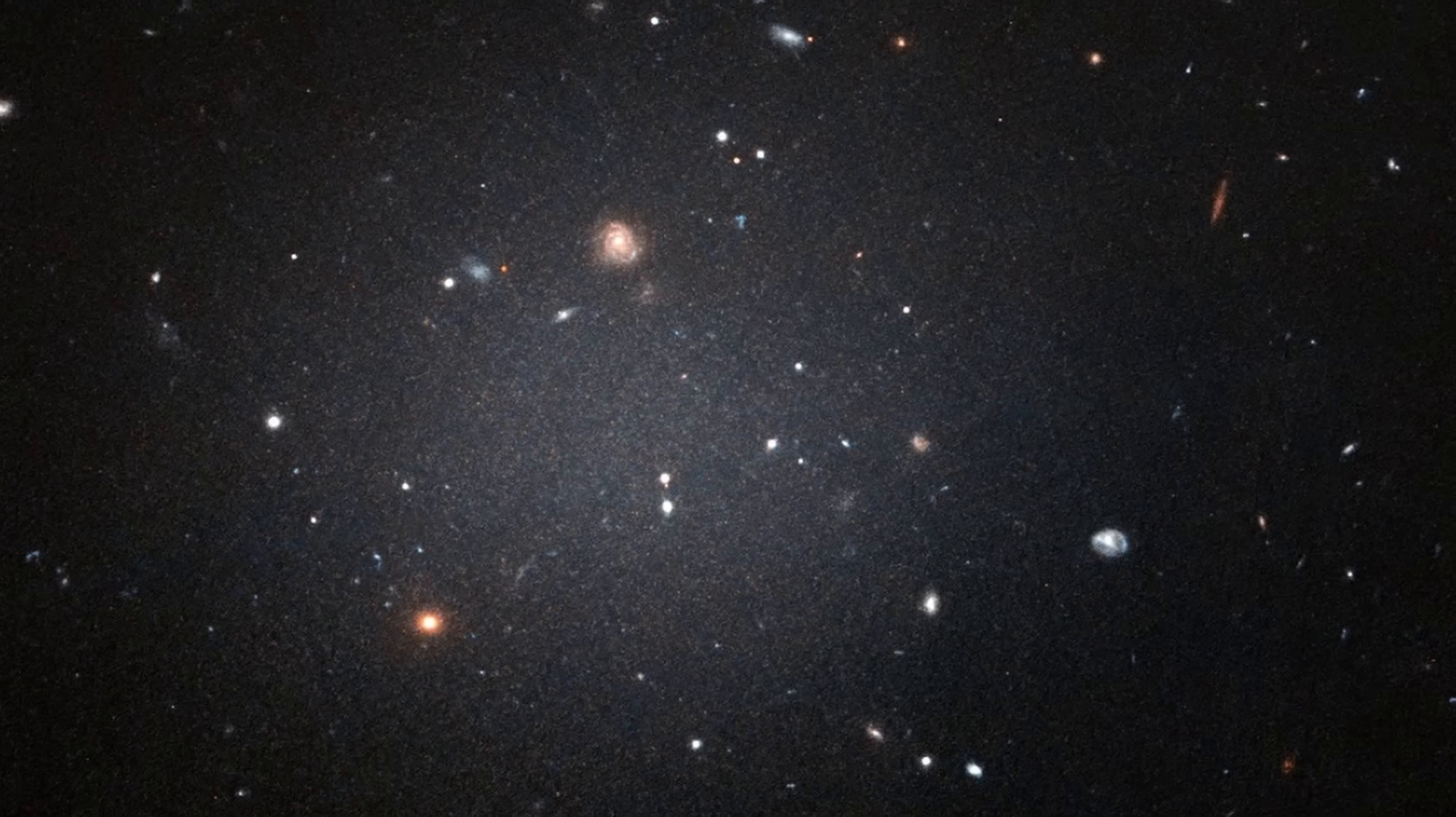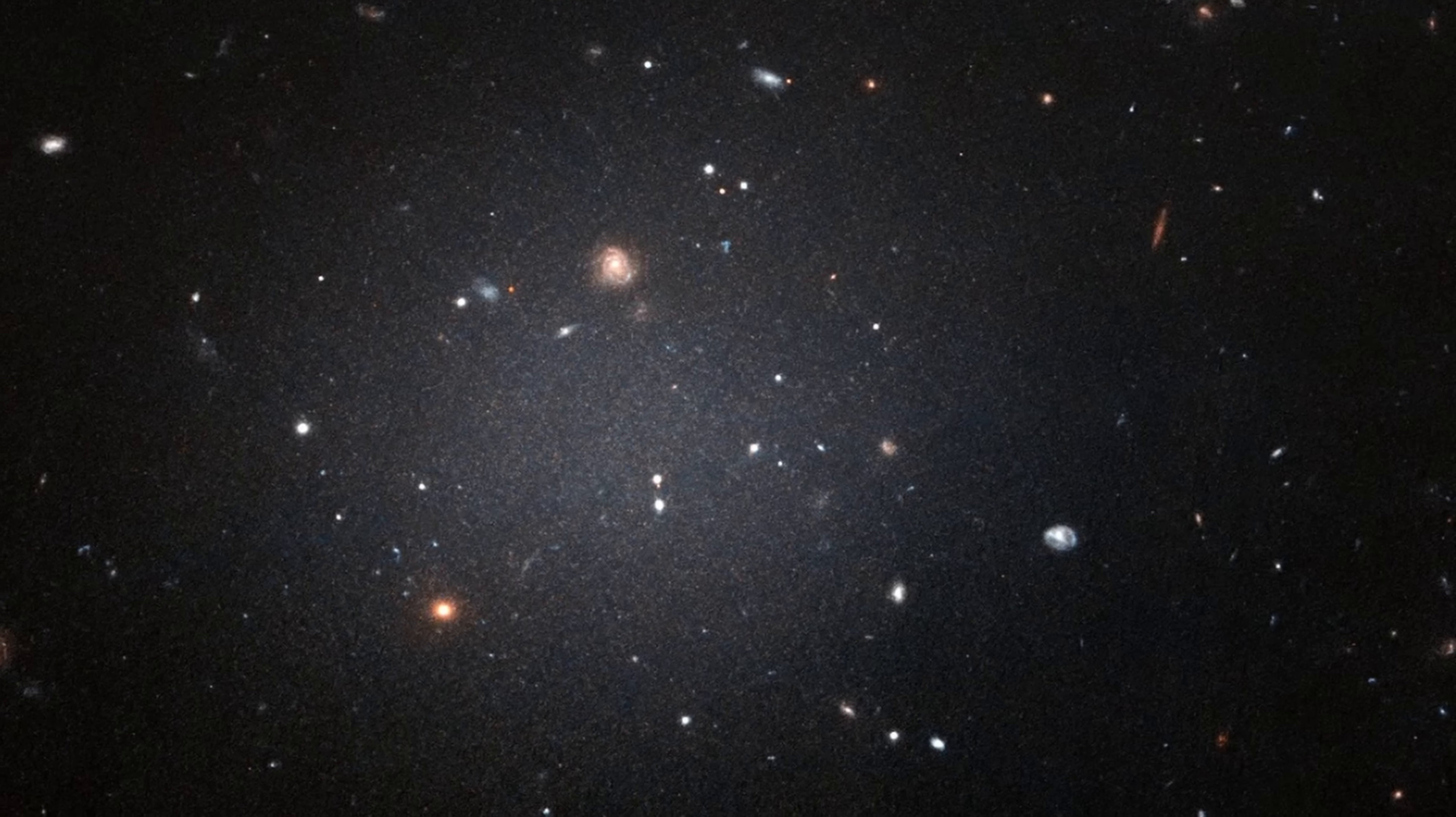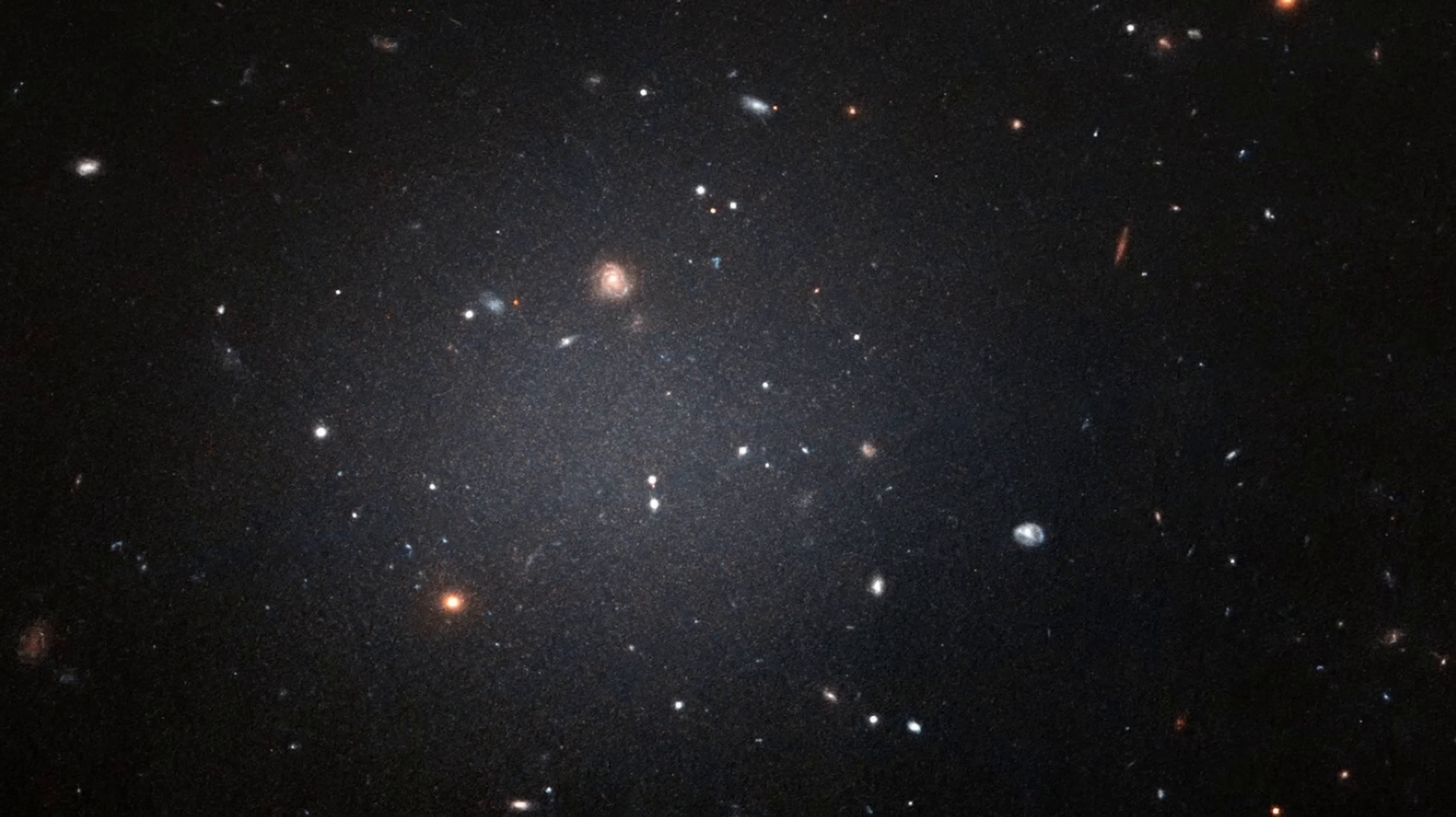And so, first of all, for alternative theories, this suggested that dark matter might be a particle after all, and these alternative theories, like MOND, might not be correct. Second of all, for modern cosmology, this also presented a bit of an issue, because it was kind of difficult to explain how these galaxies would form.